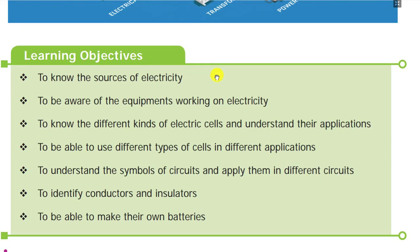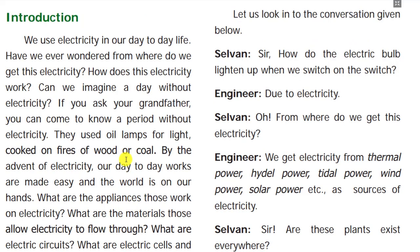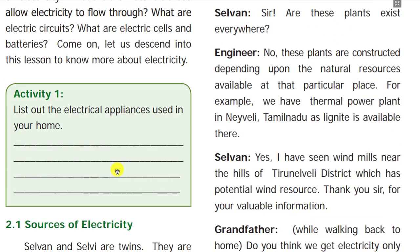In this lesson you are going to learn about sources of electricity — where we can produce electricity, equipment working on electricity, and all the electrical appliances in the home. Next, we will see what kinds of electrical cells there are and understand their applications. A cell is basically a battery — like in a remote control or a mobile phone. In the second part of the video we will see circuits, conductors, insulators, and how to make our own battery.